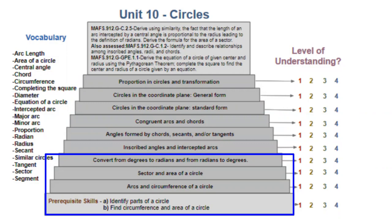Hello everybody, welcome to the literal last lesson we have before this test coming up on Tuesday. As a reminder, we have reviewed circumference and area of a circle, we have learned about arc length and sector area of a circle, and then we have converted from degrees to radians so that we can get answers in terms of pi, answers in degrees, and interchange between radians and degrees.